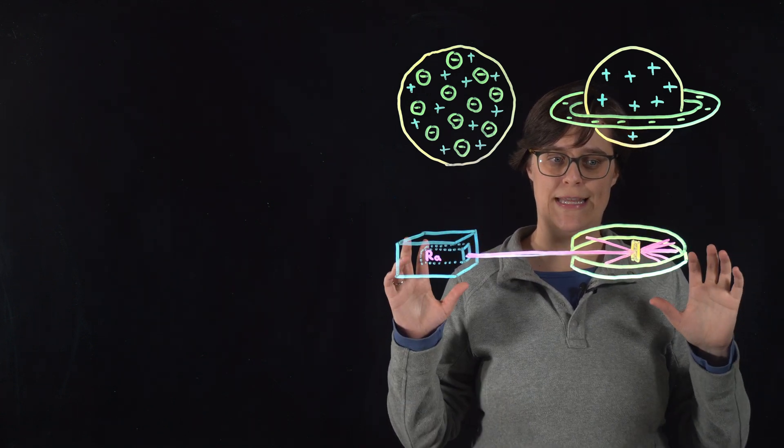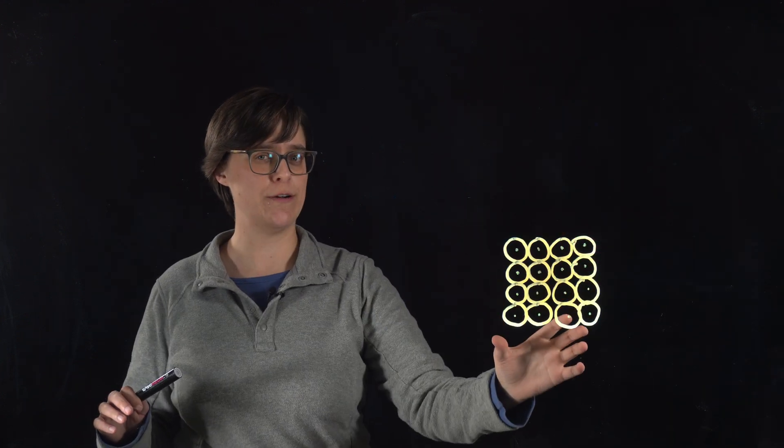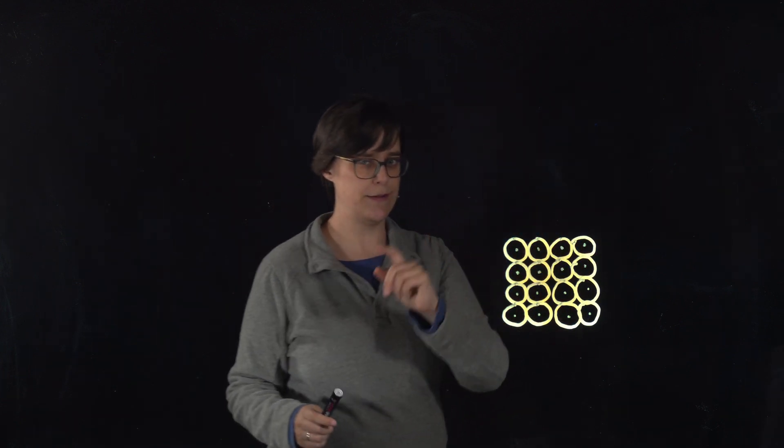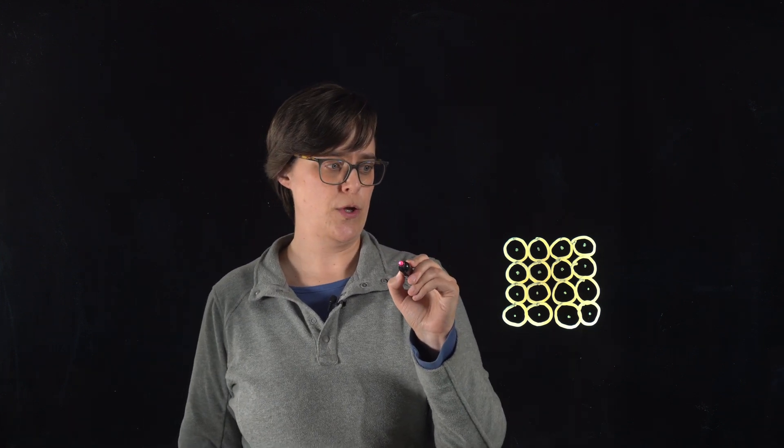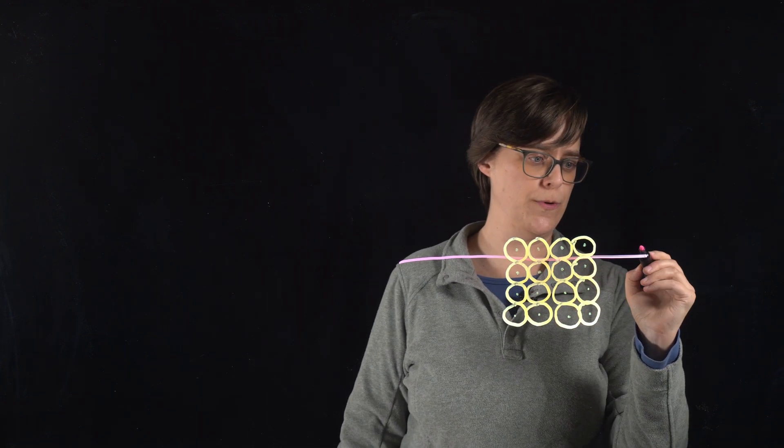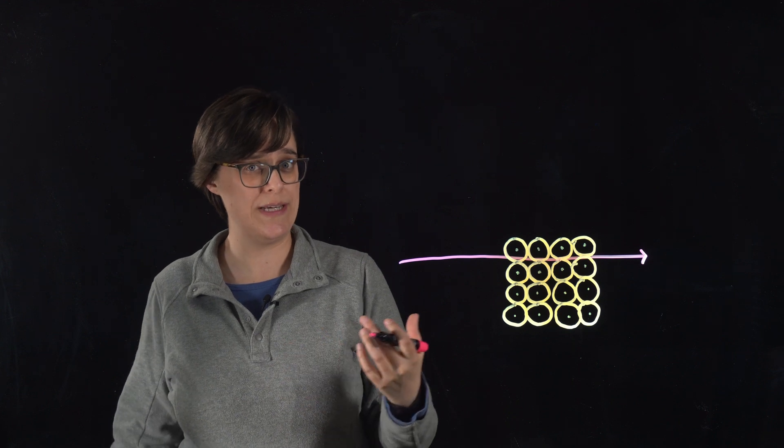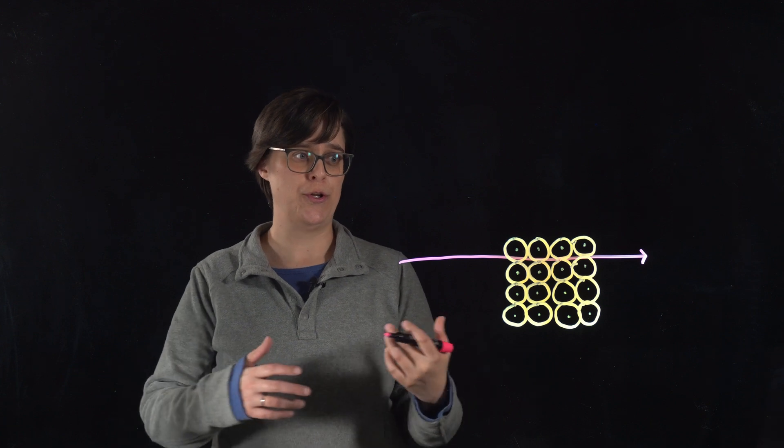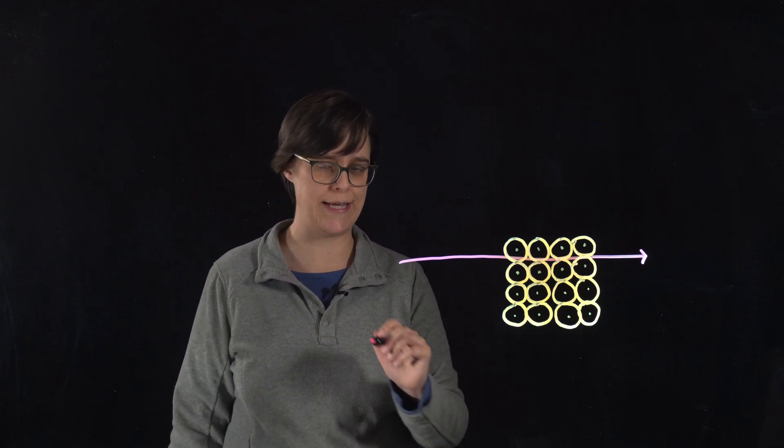However, that's not what Rutherford and his team were seeing. Let's look at a cross section of the gold foil, with most of the length of the gold foil out this way, to think about what's happening. What he found is that most of the alpha particles went straight through. That would be consistent with atoms being mostly empty space. They were never around a charge to attract them, or repulse them, or to change their trajectory in any way.